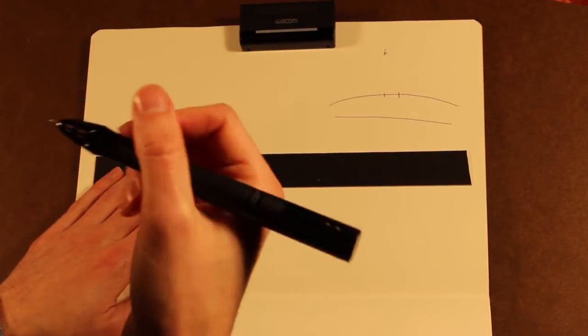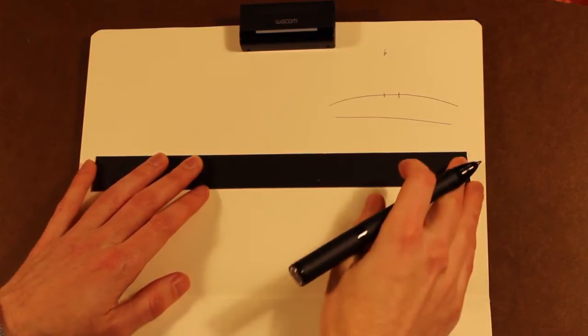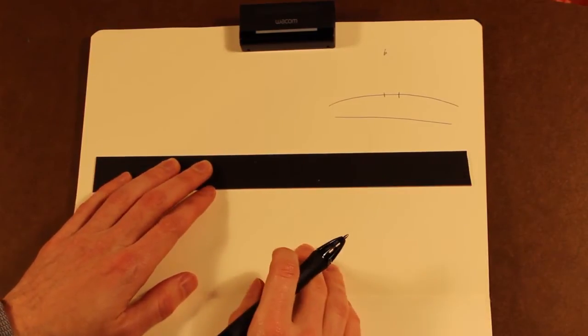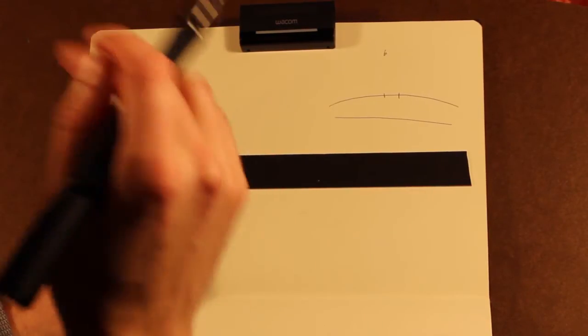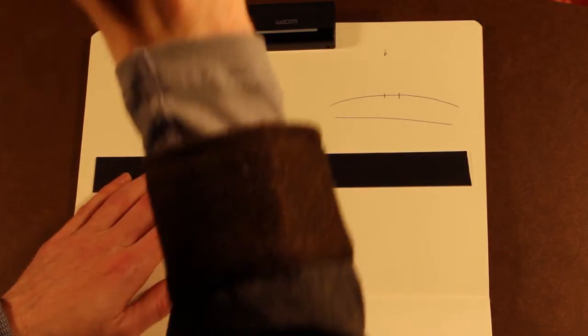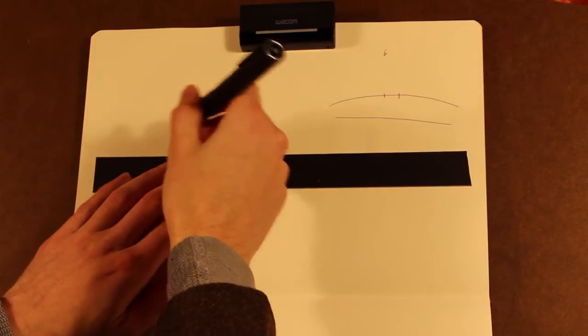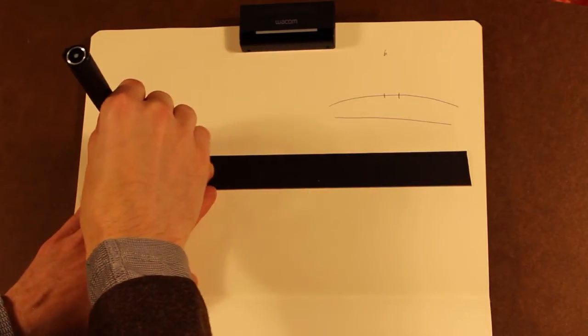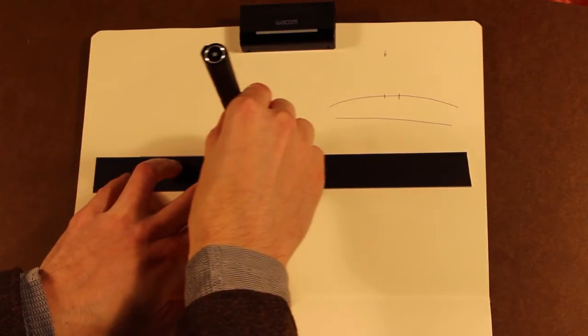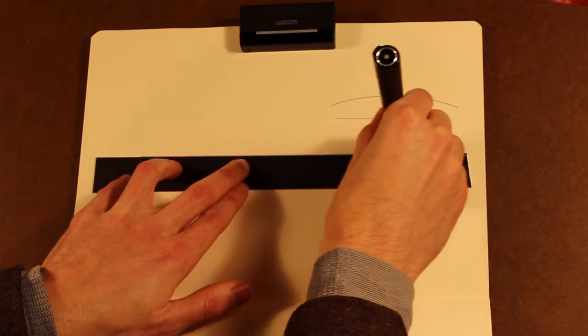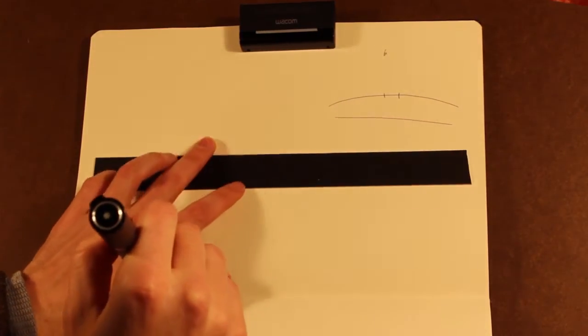So basically, you take your height, whatever height you're sitting at to draw or standing at, and you project a line paralleling the ground out, and that is going to be your horizon line. So when you think of the horizon line, you're thinking of a line that's really far away from you and in deep space.